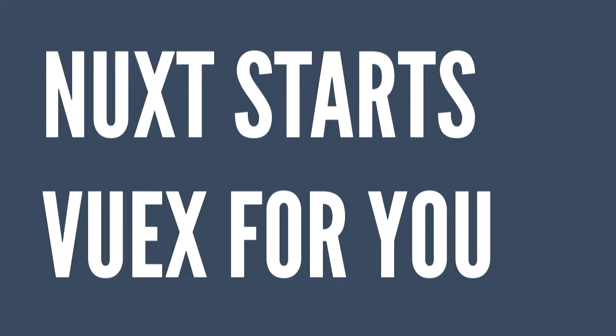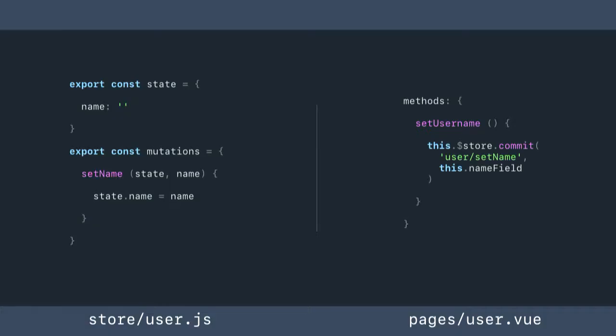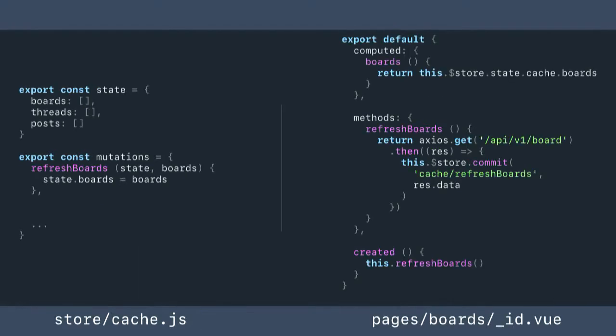Nuxt, as part of its big scaffolding, will start Vuex for you — if you put your Vuex information in a particular file in a particular place, it just spins it up automatically. It also supports modules mode, which means you can split out different parts of your state. For example, you could split the cache of results for each page from the user information just by putting them in a slightly different place, and they're namespaced automatically. So calling store.commit('user/setName') calls setName within the user part of your state.